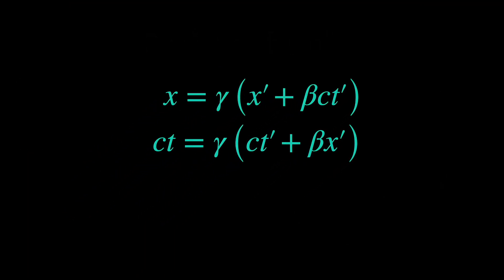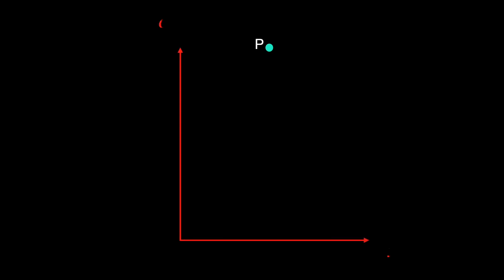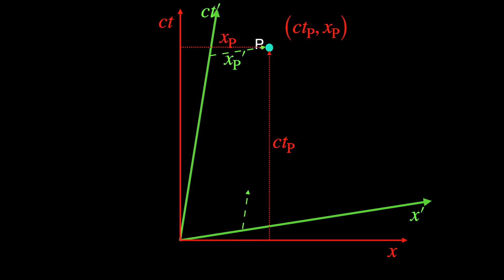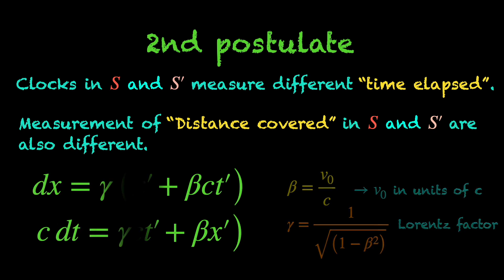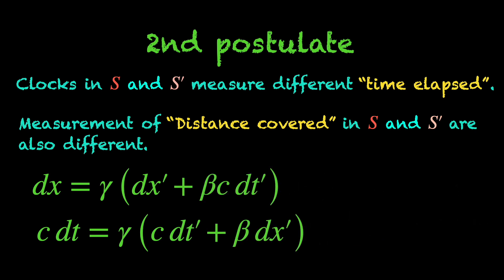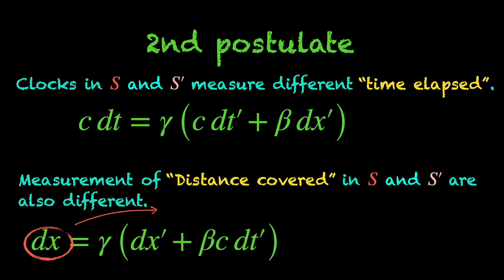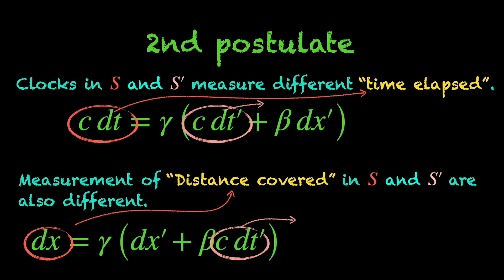Anyway, the Lorentz transformation equations show how, for a given event P, its space and time coordinates X and T in S frame are related to its space and time coordinates X' and T' in S' frame. Since these equations are linear in the space and time coordinates, that is, no X square or X cube or XT or T square and T cube type of terms are in here, we can write them for coordinate differences or coordinate differentials as well. These differentials represent changes in the space and time coordinates. So basically, we get how the spatial distance between the two events and the time needed to cover that distance as measured in S and S' frame are related.